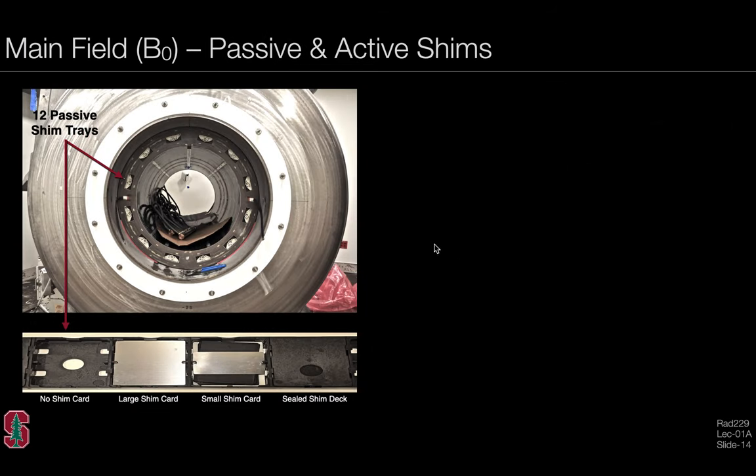The main B0 field, when delivered, is quite homogeneous but not perfect. It can become less homogeneous as a function of time as the system environment changes, and when subjects or objects are added to the scan environment. We'll discuss briefly the concepts of passive and active shimming.